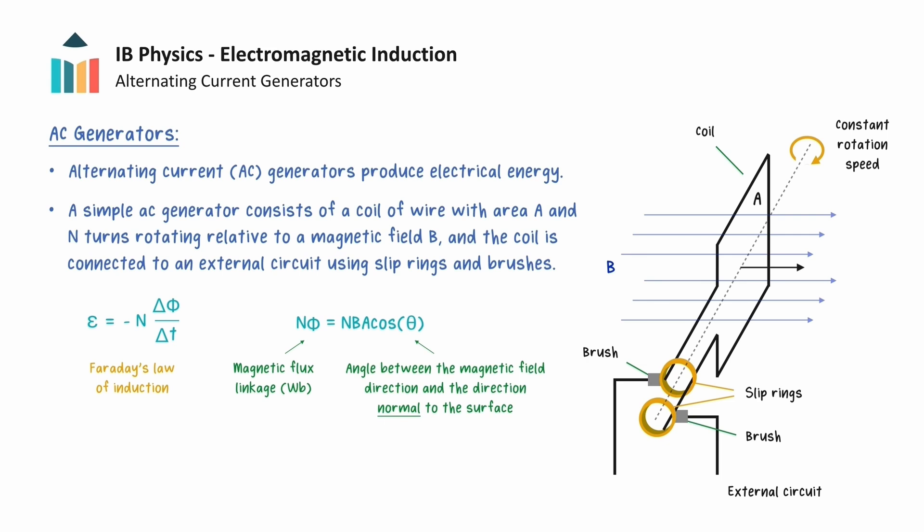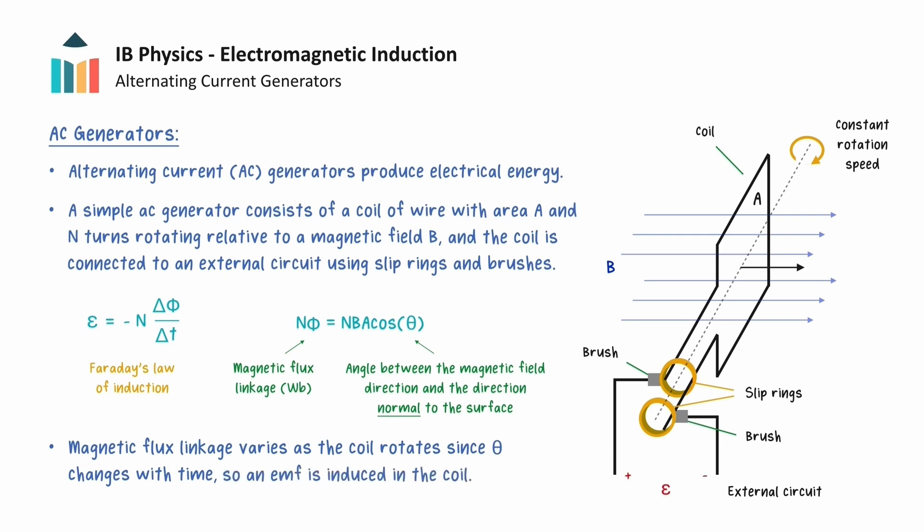In AC generators, the magnetic field B and area of the coil A are both constant, but the flux linkage varies as the coil rotates, because the angle theta between the magnetic field and area changes with time, so an EMF will be induced in the coil. This EMF is then transferred to the external circuit.